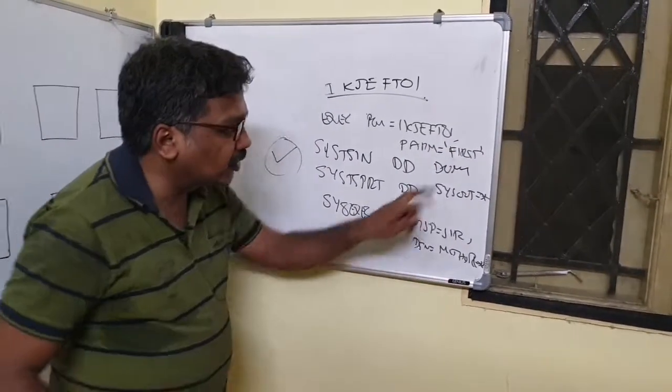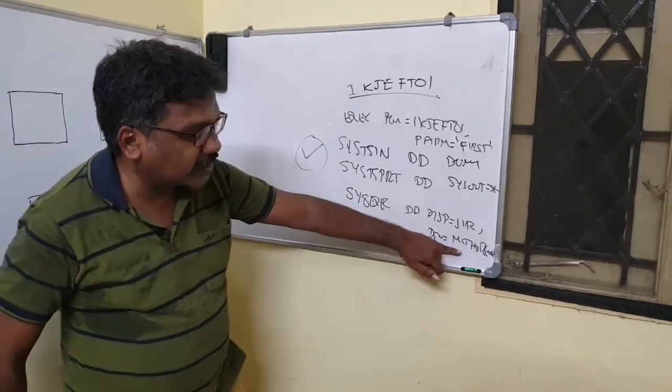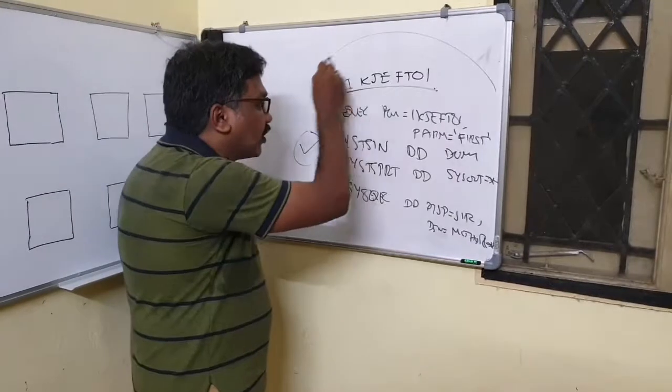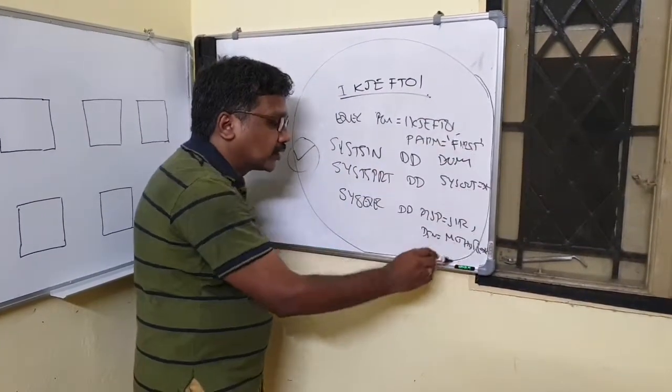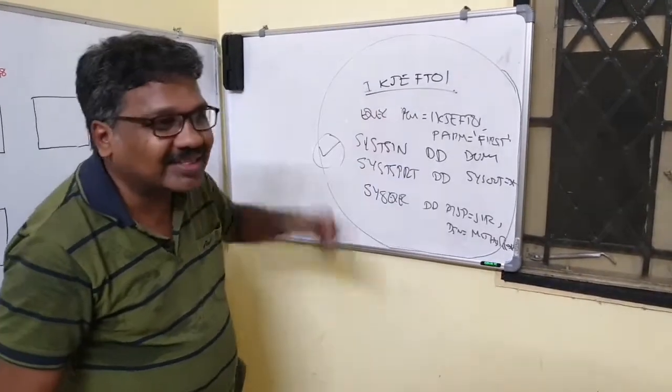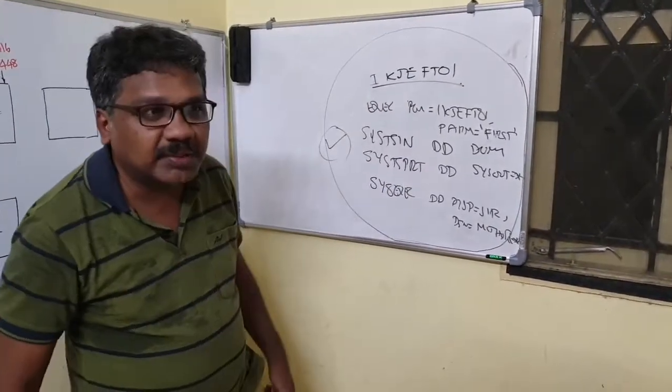And PARM report even HELLO or FIRST whatever our program which we want to execute. So if we submit this, what will happen is this post will be looked up in this library and if it is found that will be executed. So this is a way of executing a batch program, executing your REXX program in a batch mode.